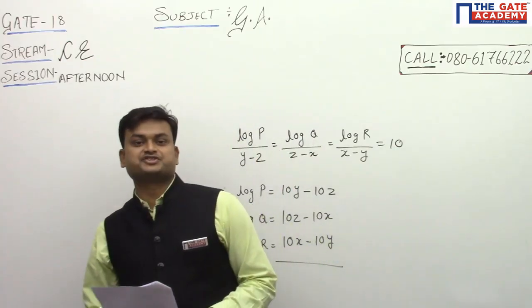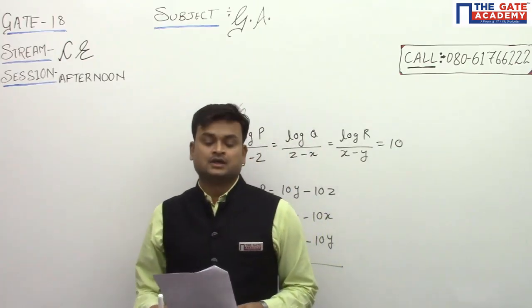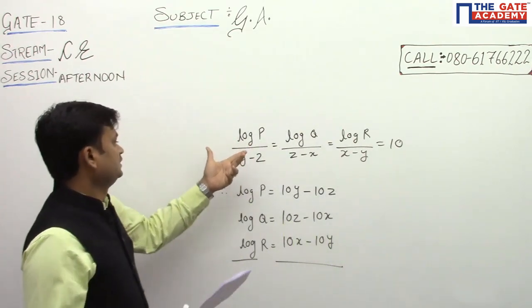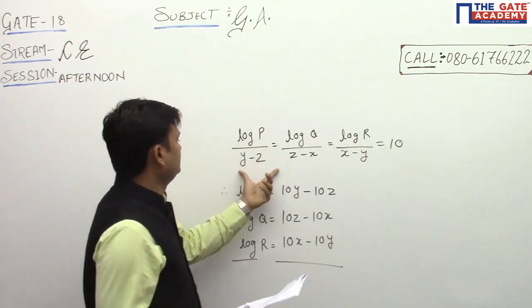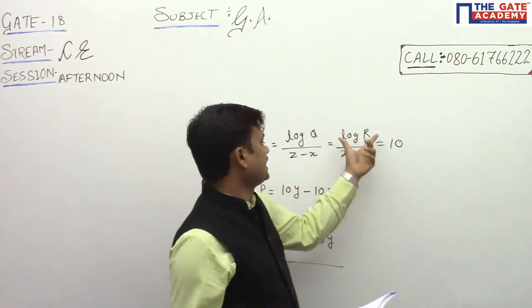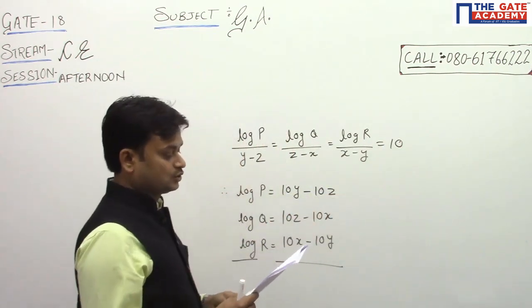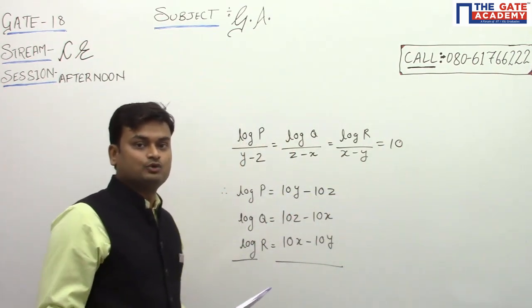Hello friends, let's solve the next question from Civil GATE 2018 paper afternoon session. It is a log question. It is given: log P/(y-z) = log Q/(z-x) = log R/(x-y) = 10, and the question is asking what is the value of P×Q×R.